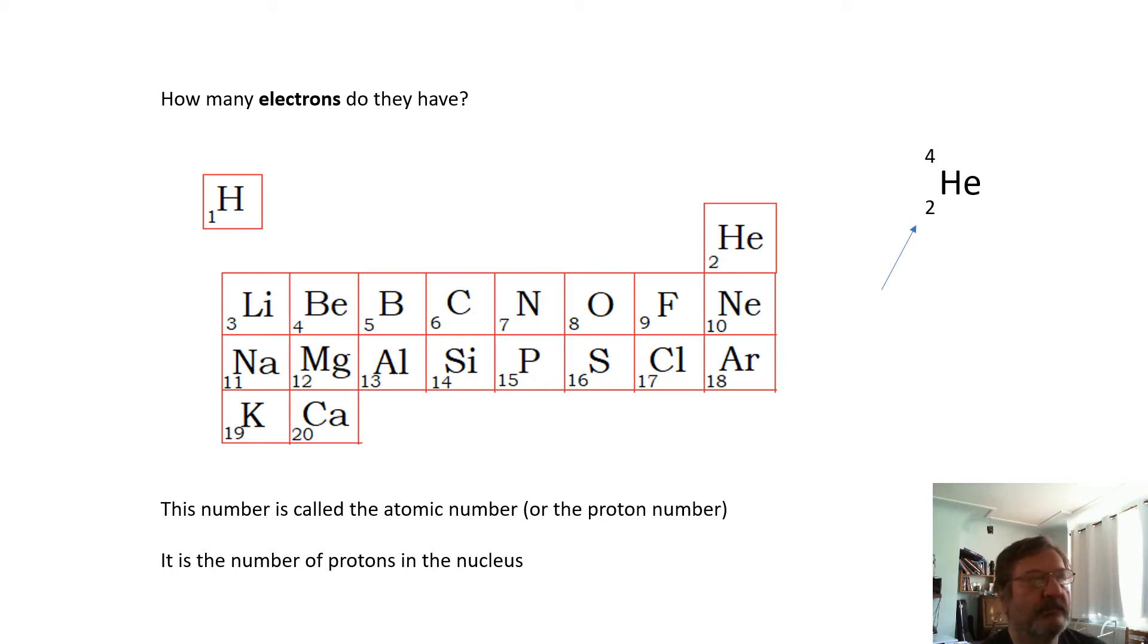Or the proton number—the number of protons. If it's a neutral atom, then it's also the number of electrons. So the small number on the periodic table is the atomic number, and it's the number of electrons or the number of protons in the nucleus.